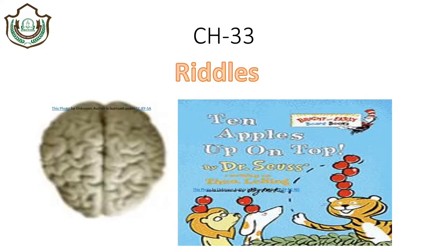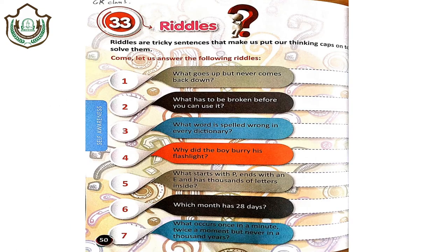Students, now let's do some fun activities. Let's move on to chapter number 33 — that is riddles. Riddles are tricky sentences that make us put our thinking caps on to solve them. So this time you have to exercise your brain. The very first riddle is: what goes up but never comes back down? The answer is age.